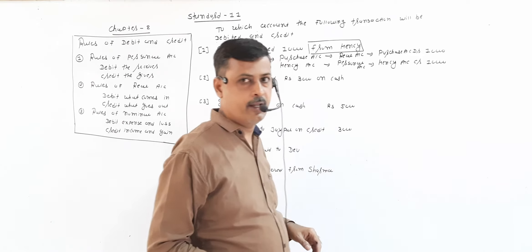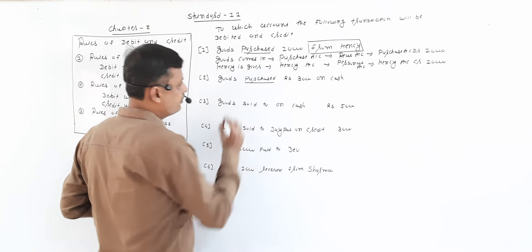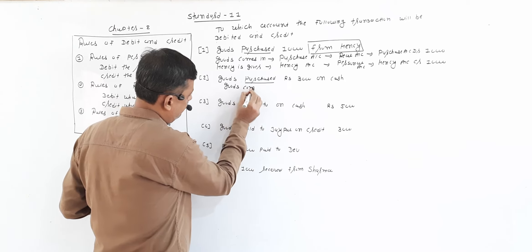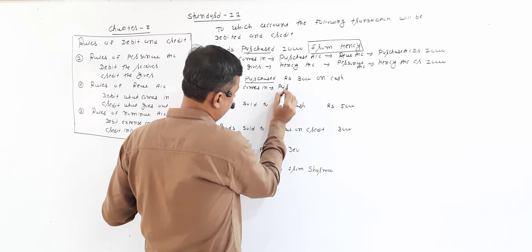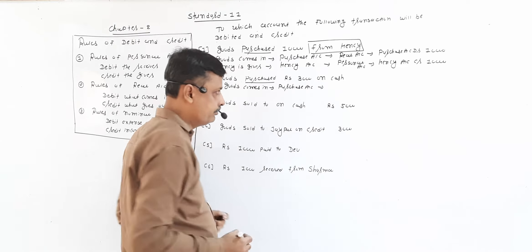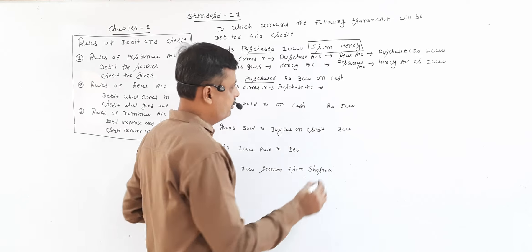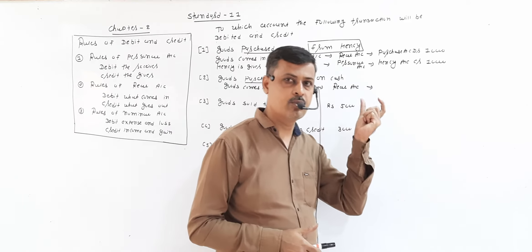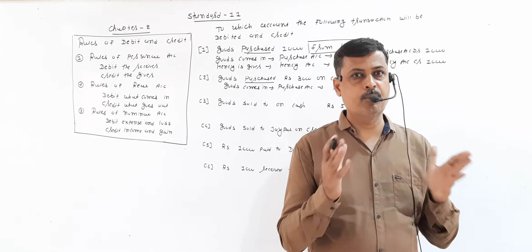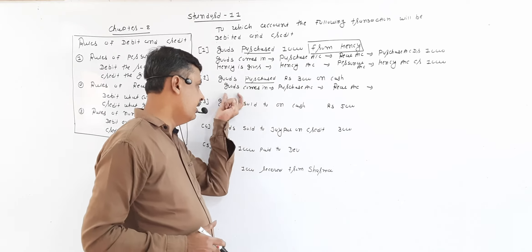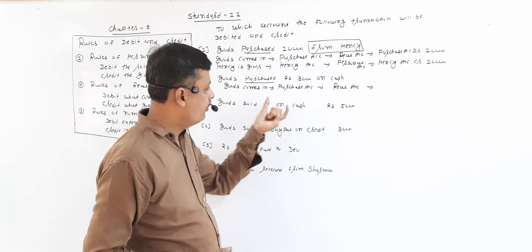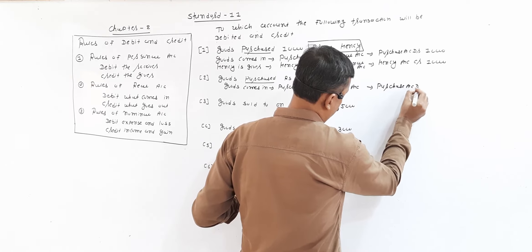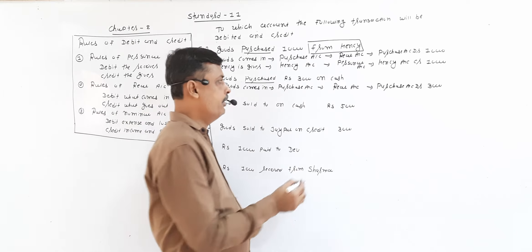Second transaction: goods purchased Rs.3,000 on cash. Here again we purchase goods, and when goods are purchased, goods come in. So purchase account is affected. Purchase of goods — all goods accounts are real accounts. As per real account rules: debit what comes in, credit what goes out. Goods come in, so purchase account is debited Rs.3,000.